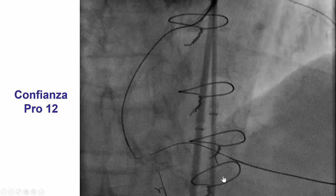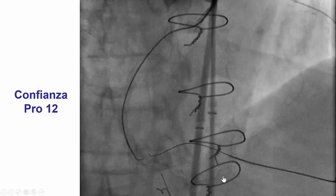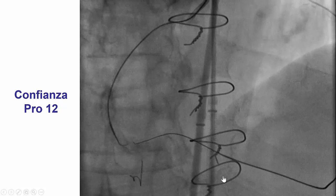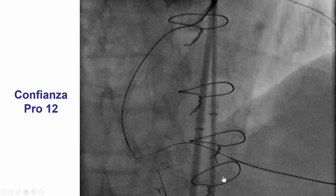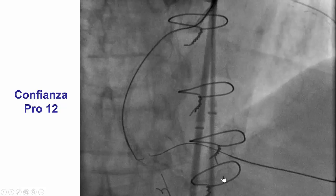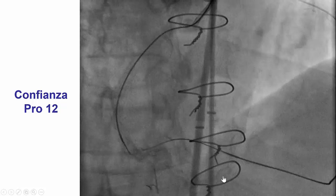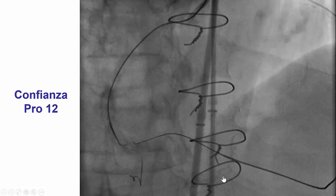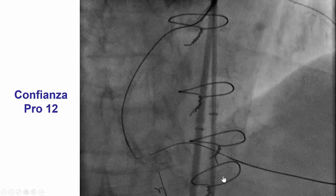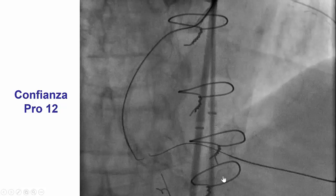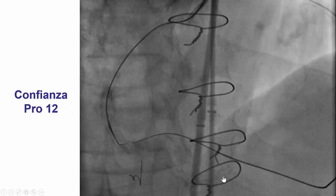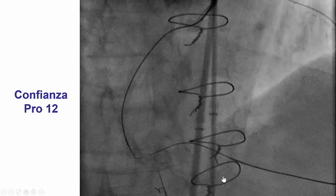However, it was very challenging to engage the lesion even retrograde, because of the bifurcation of the distal cap. We did multiple attempts with a Pilot 200 that were unsuccessful. Finally, we used a Confianza Pro 12 to enter into the occlusion, which then appeared to be moving in sync with the antegrade equipment.